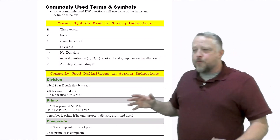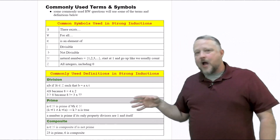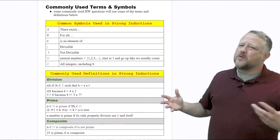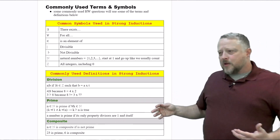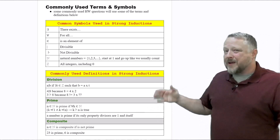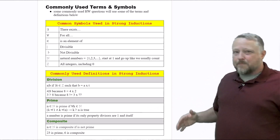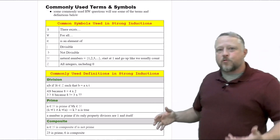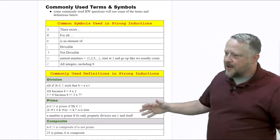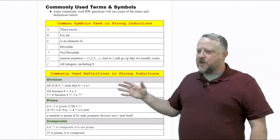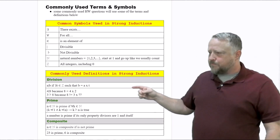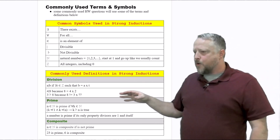I bring that up because there are three common terms that are going to come up. It's worth going over because it's going to be part of the proof that we need for strong induction. The first is division — I'm going to go over division in detail here in a moment.